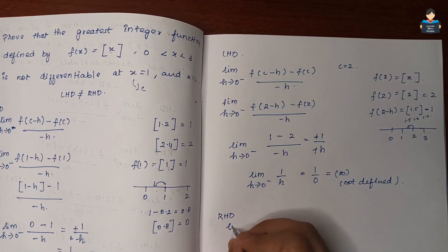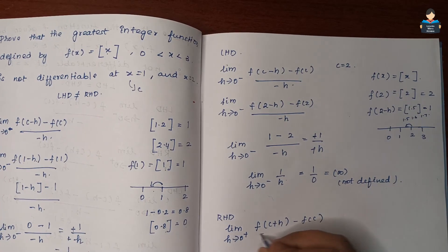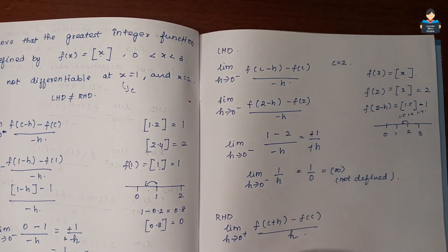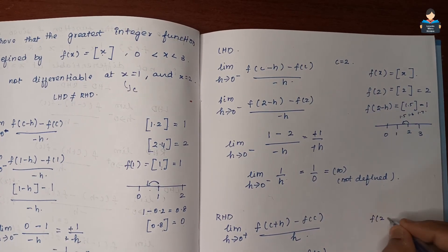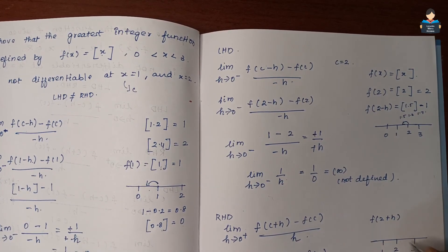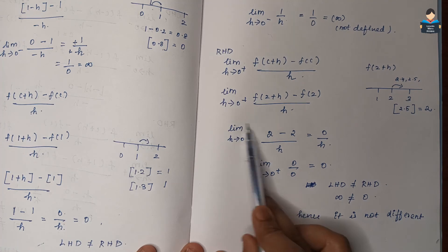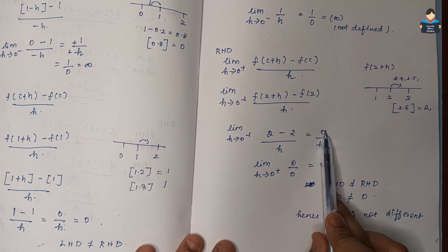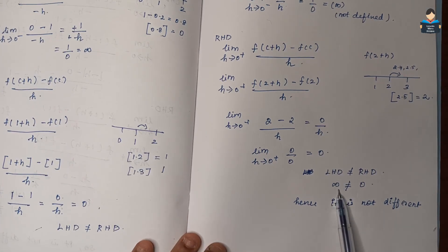Right-hand derivative at x = 2: limit h tends to 0 plus, f(2 + h) - f(2) by h. 2 + h is approximately 2.5, so ⌊2 + h⌋ = 2. f(2) = 2. So (2 - 2)/h = 0/h = 0. Left-hand derivative is infinity and right-hand derivative is 0, so they are not equal.